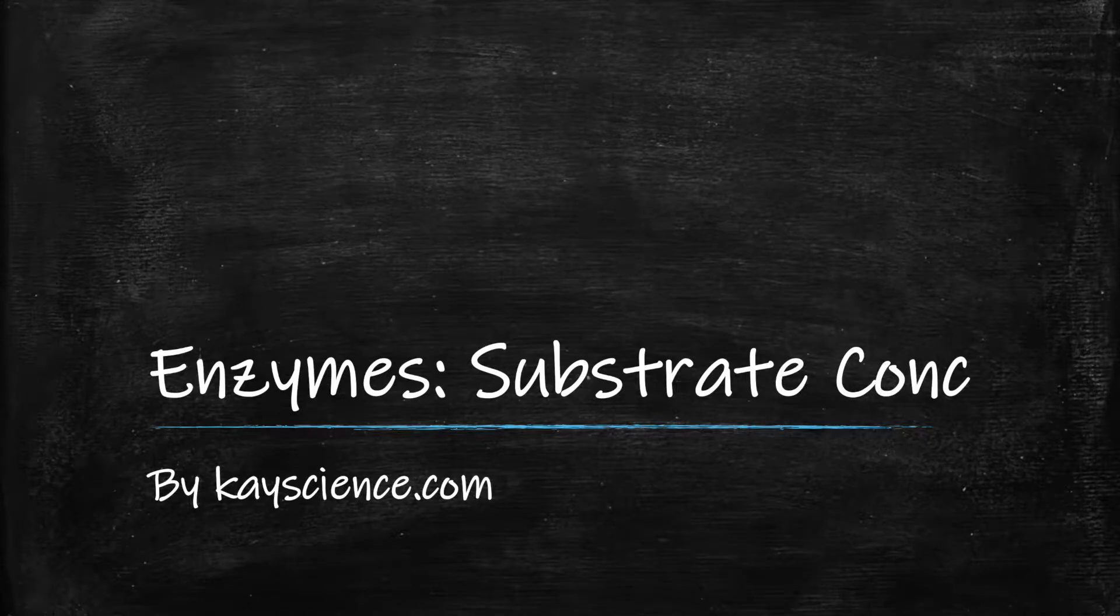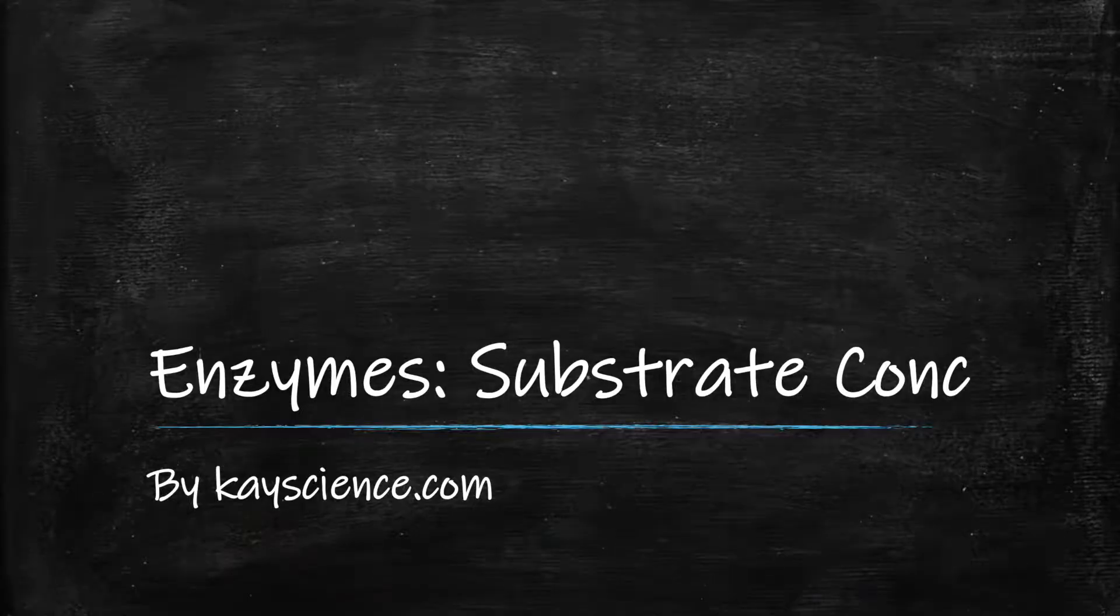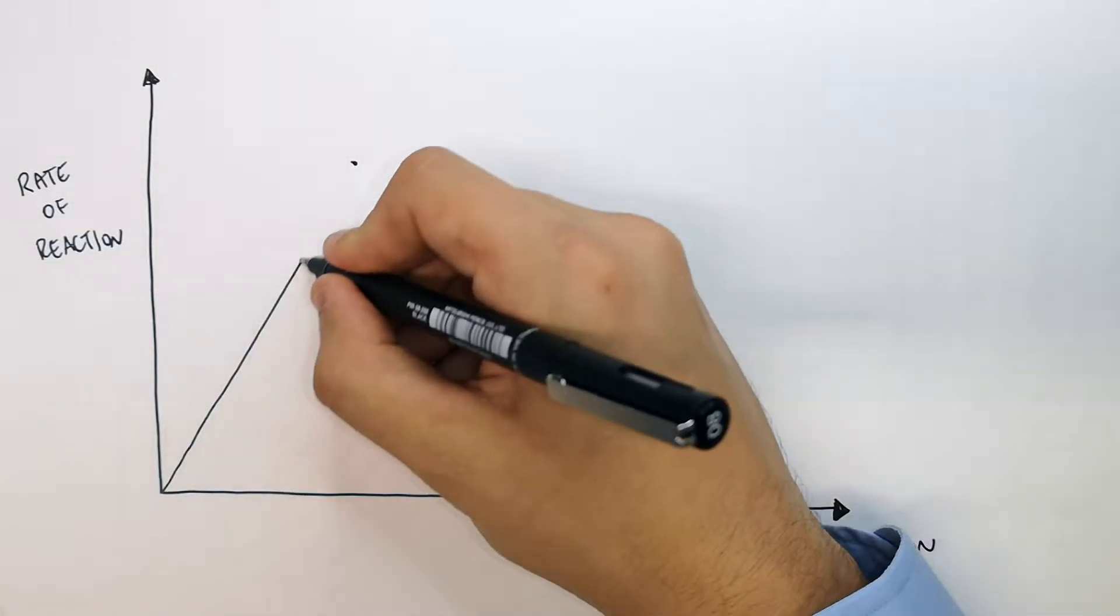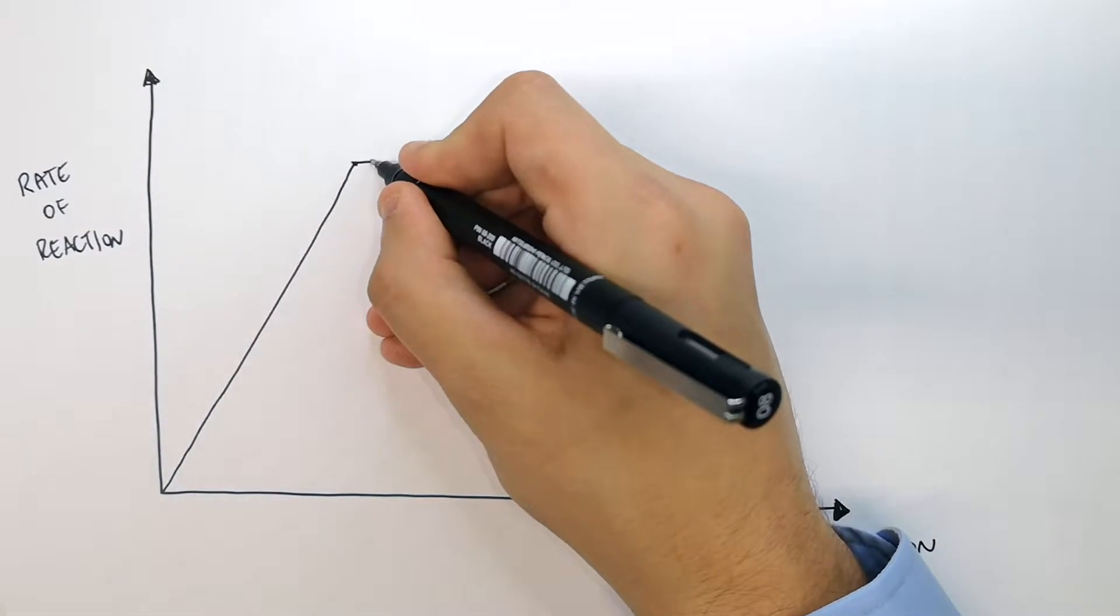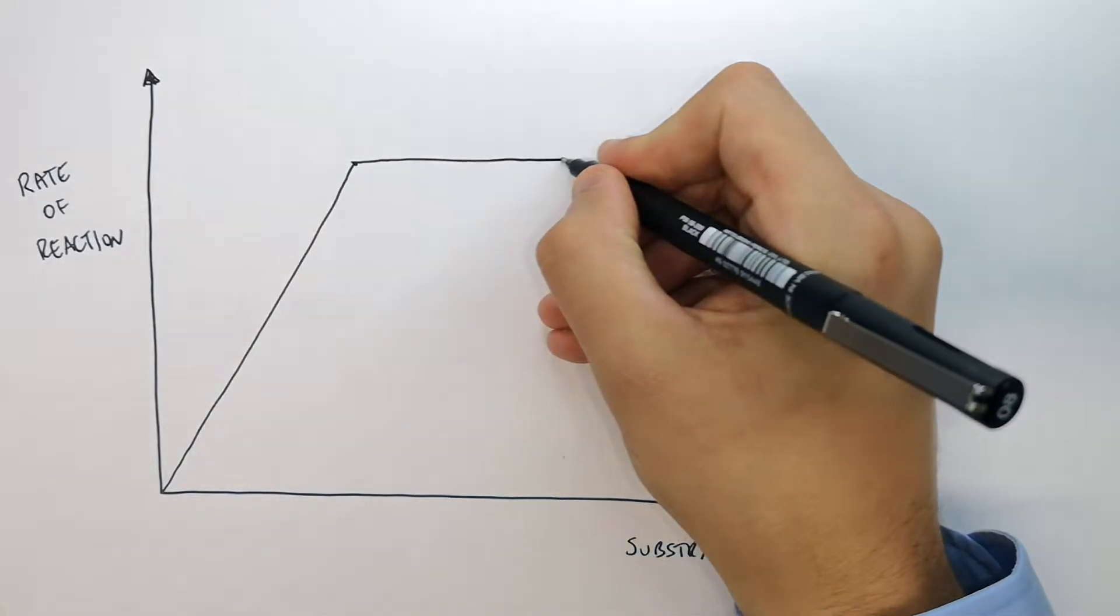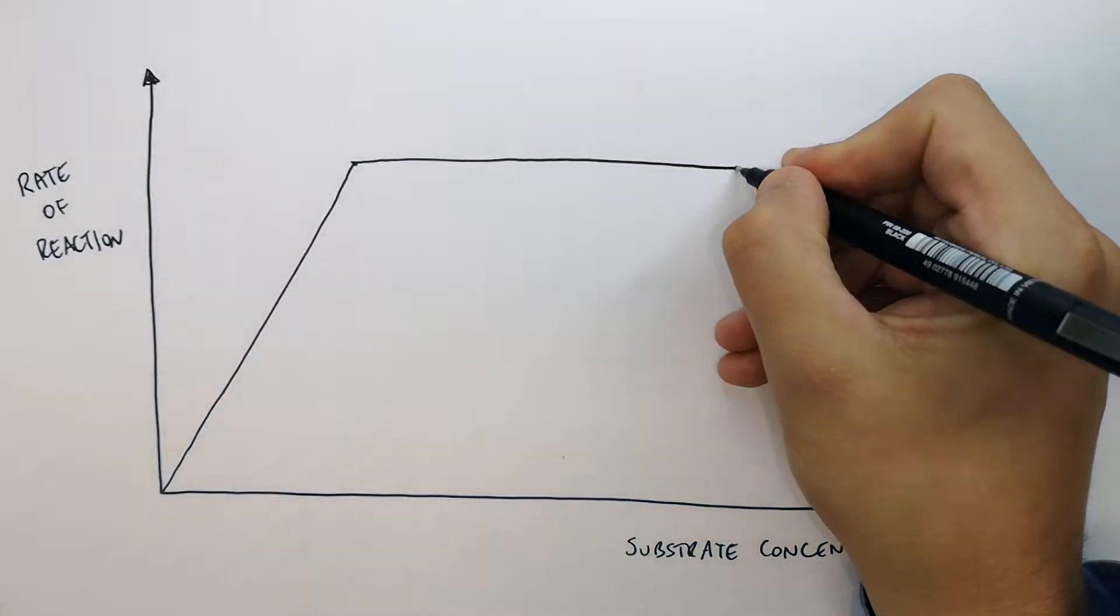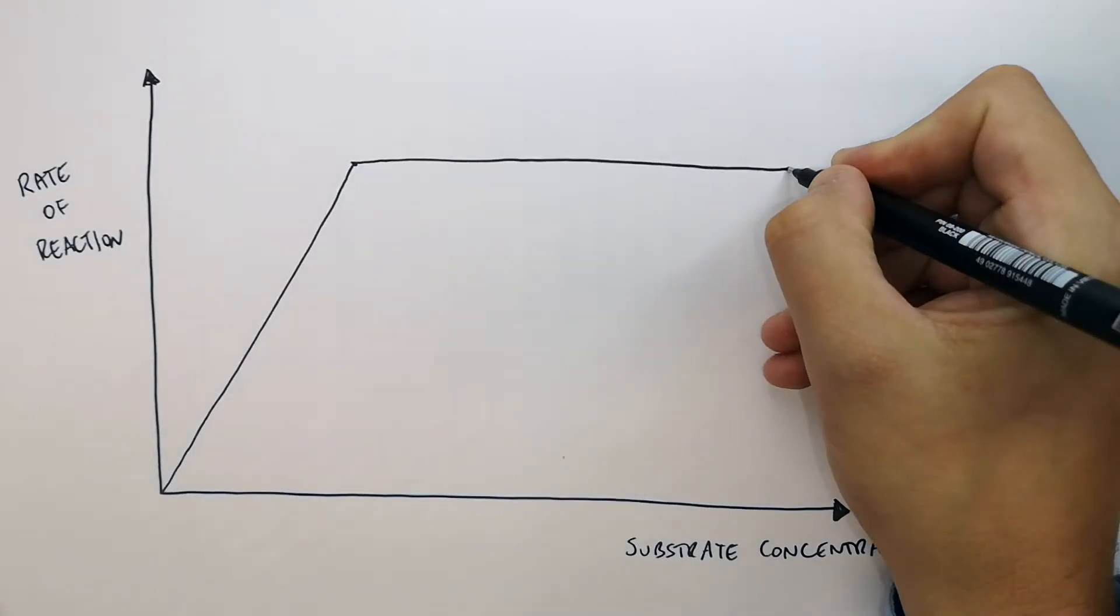The effect of substrate concentration on enzyme activity by kscience.com. As you increase the substrate concentration, the rate of reaction will increase. You need to be able to explain why it increases and then plateaus.